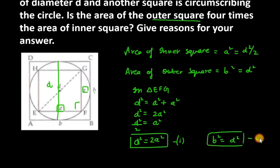The second one is b² equals d². Now, if we compare these two equations, then d² will cancel from d². What has left us? 2a² equals b².